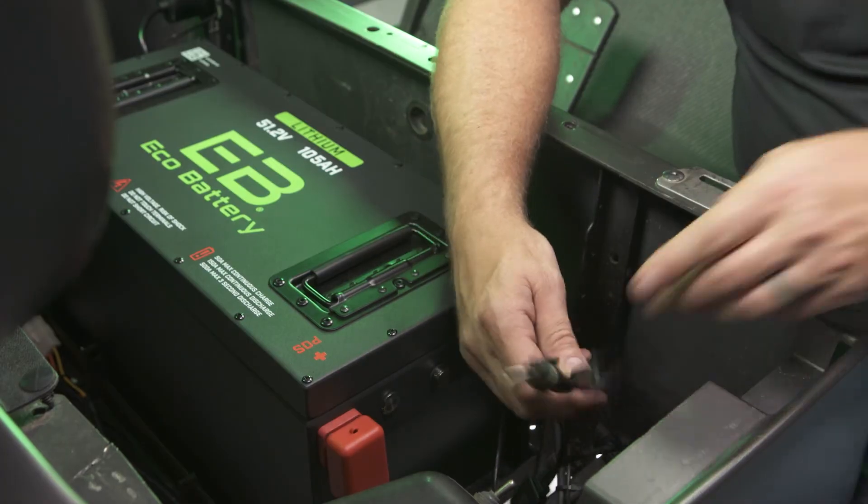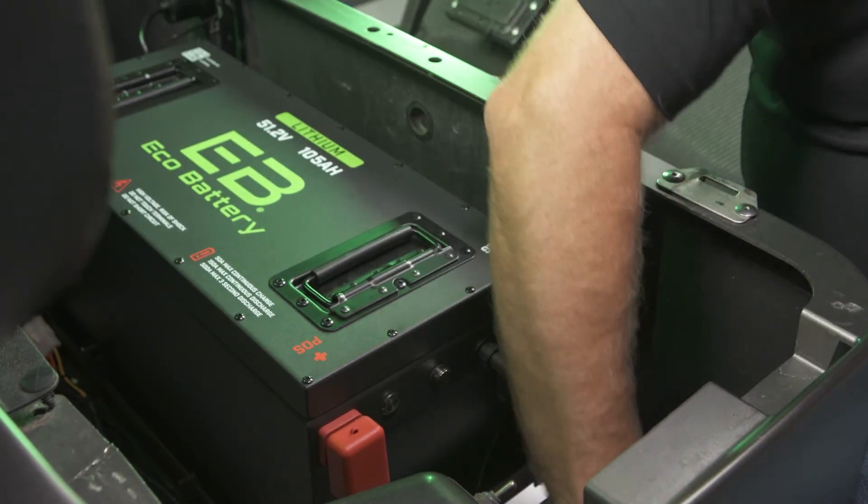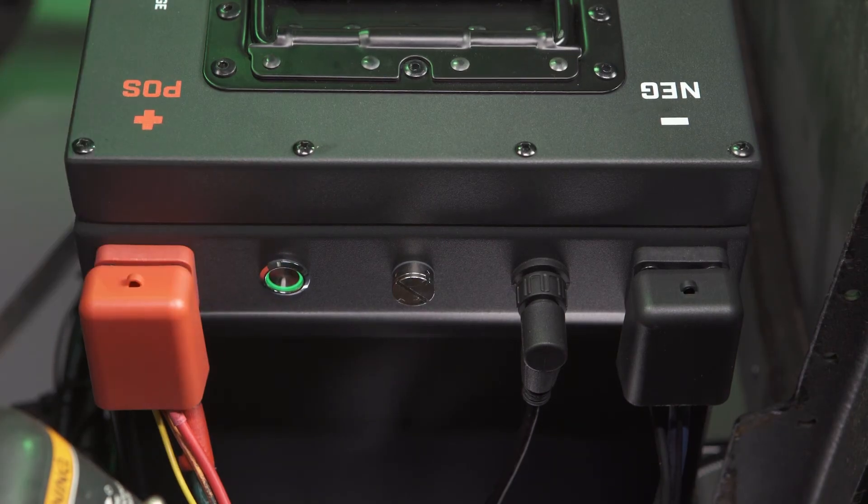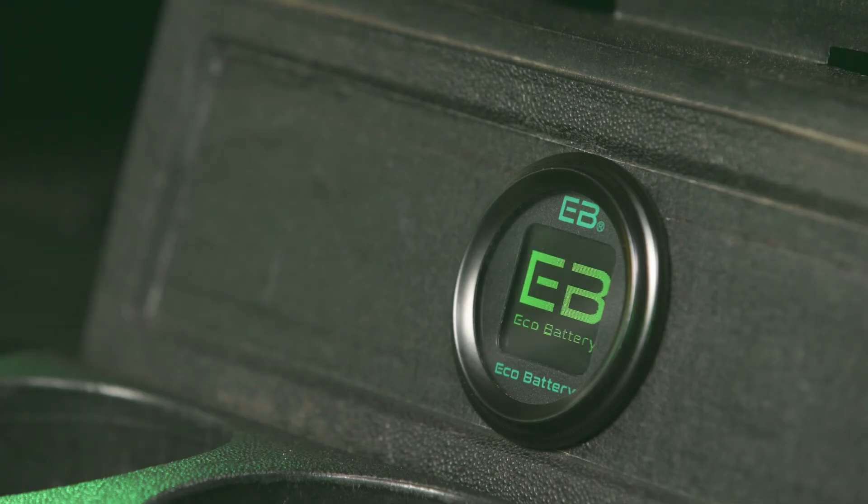Double check one hundred percent that all wiring is correct. Do not power on the battery. If you're confident the wiring is correct, power on the battery by pressing the on-off button. Once the button is lit green, the battery is on and power is available.